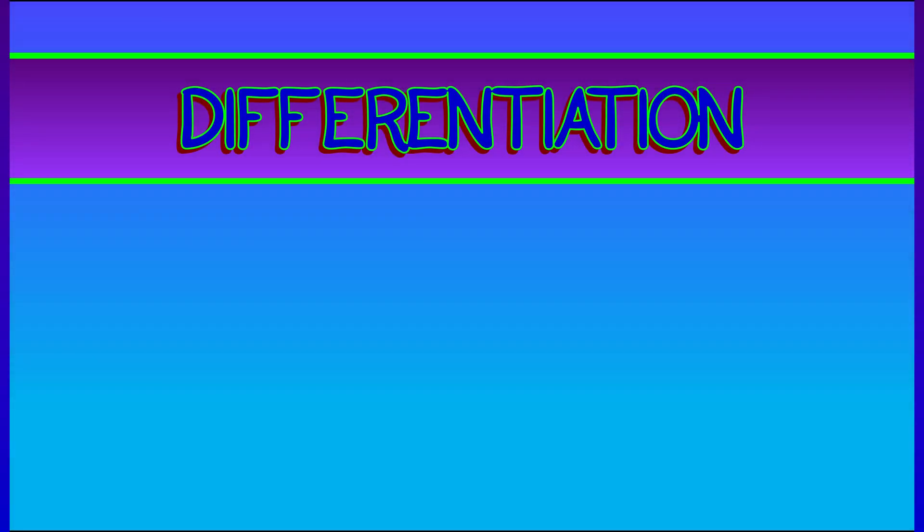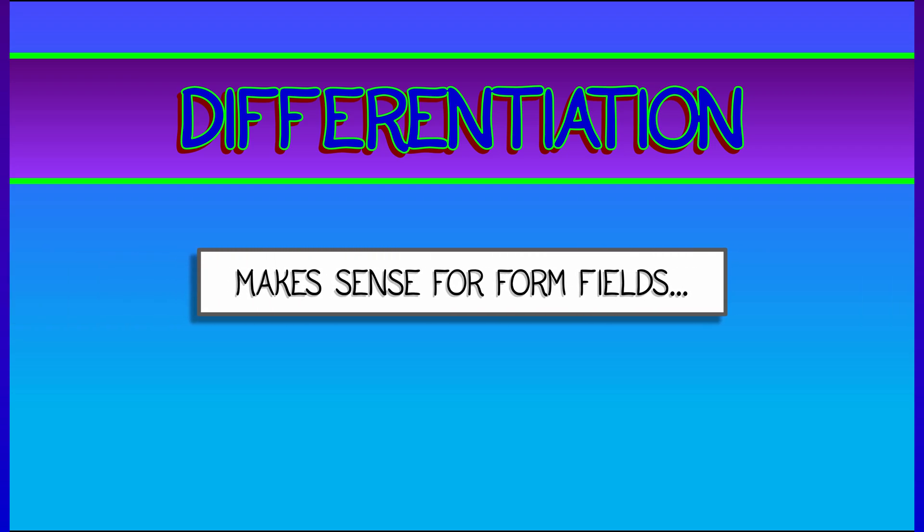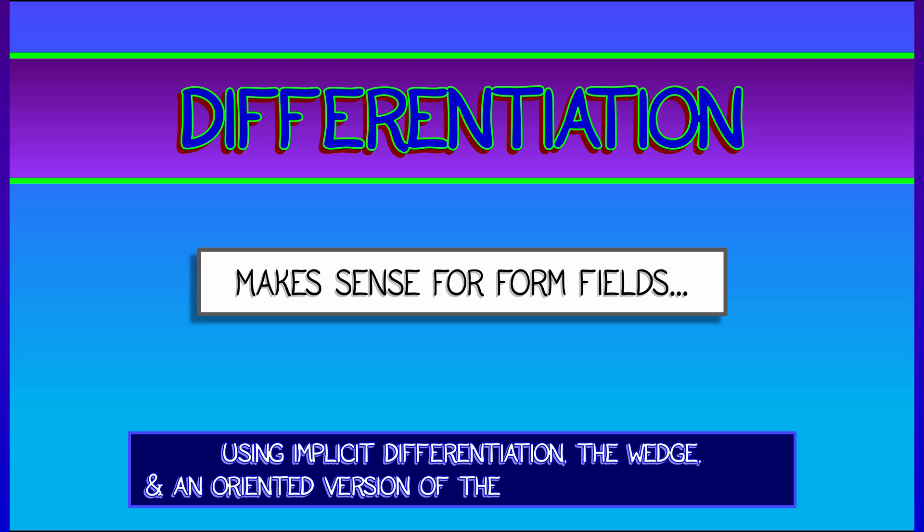Our next step in building a calculus for fields is to learn how to differentiate form fields. This differentiation makes sense using a combination of implicit differentiation, the wedge product that we now understand, and an oriented version of the more familiar product rule.